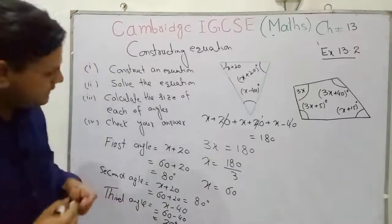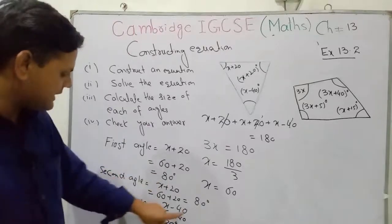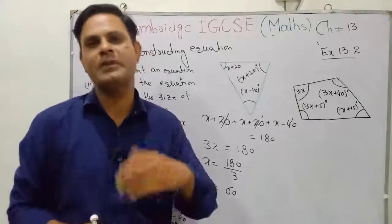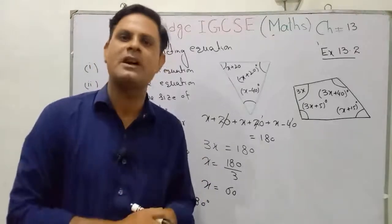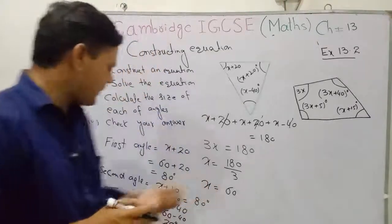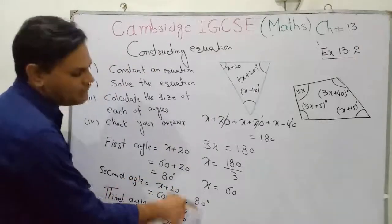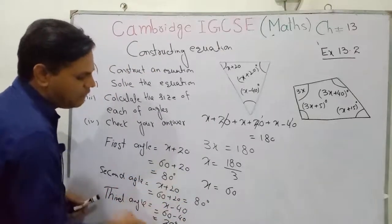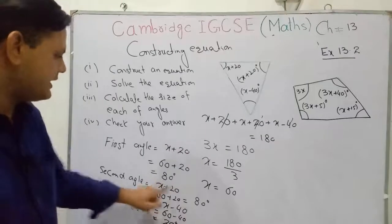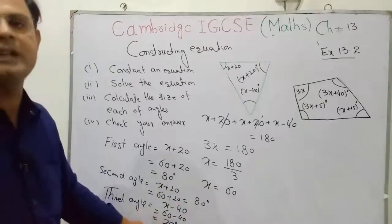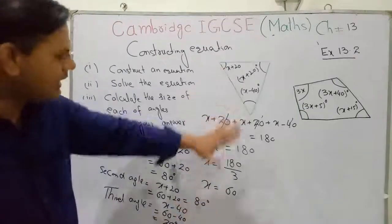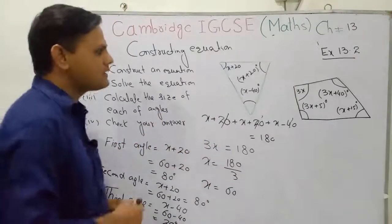To check your answer, add the three angles: the first angle is 80°, the second is 80°, and the third is 20°. If the sum equals 180° then your answer is correct, because the sum of angles in any triangle is 180°. So 80 + 80 = 160, and 160 + 20 = 180°. The answer is confirmed correct.